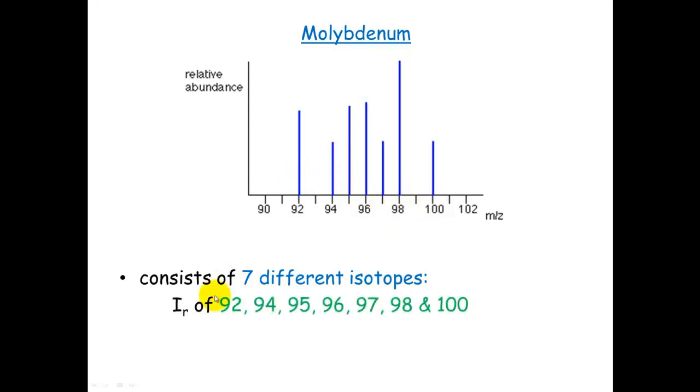They have relative isotopic masses of 92, 94, 96, 98, and 100. The most abundant ion is the 98 here, or the isotope with the relative isotopic mass of 98. All of these abundances will add up to 100% of the total amount of molybdenum atoms of that isotope.